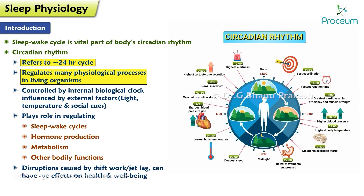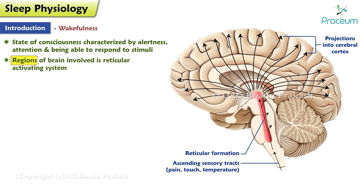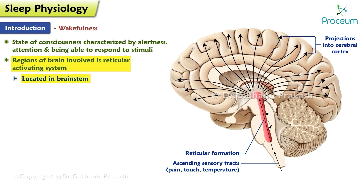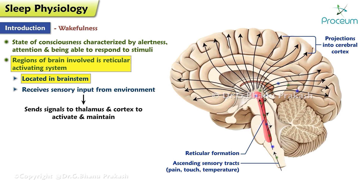Before we take a deep dive into sleep physiology, let's discuss what it means to be awake. Wakefulness is a state of consciousness characterized by alertness, attention, and being able to respond to stimuli. One of the key regions of the brain involved in wakefulness is the reticular activating system, which is located in the brain stem. It receives sensory input from the environment and sends signals to the thalamus and cortex to activate and maintain wakefulness.